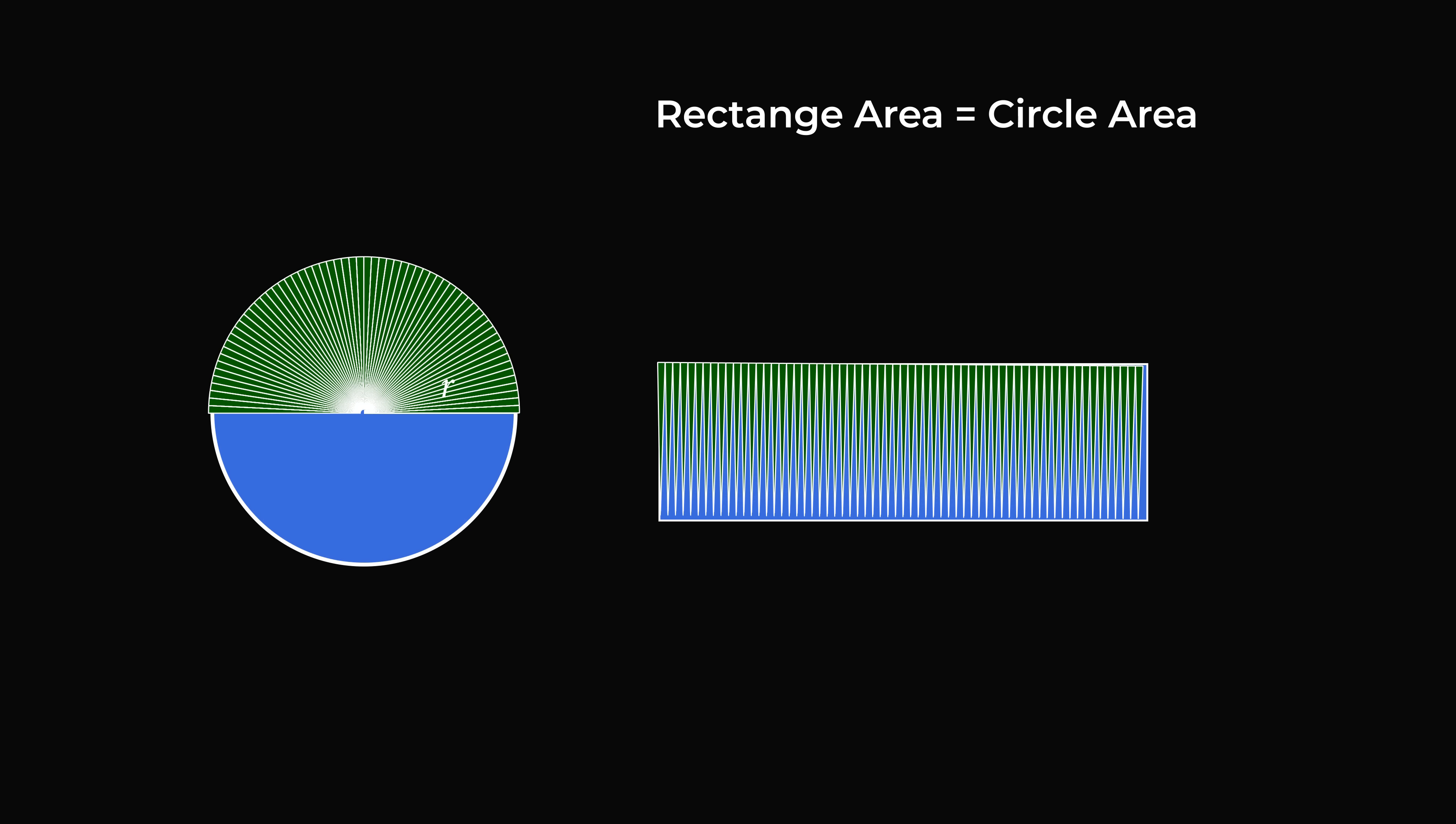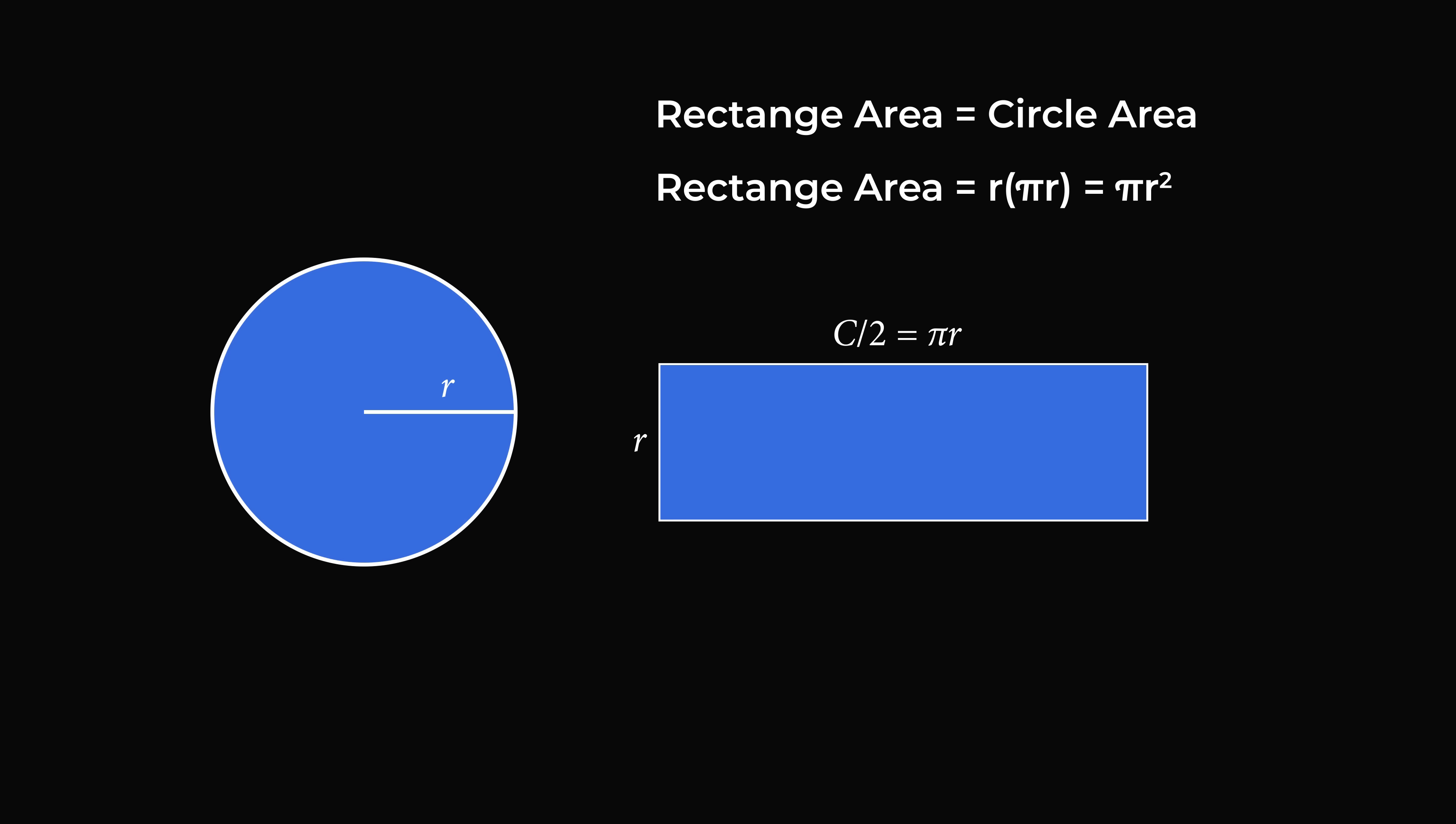Clearly one of the dimensions is the radius of the circle. For the other dimension, we think about its border being exactly half of the slices of the circle. So the other dimension will be half of the circumference. The circumference divided by 2 is equal to pi times r. So we multiply r by pi times r, and that gives the area of the circle is pi r squared. Amazing!